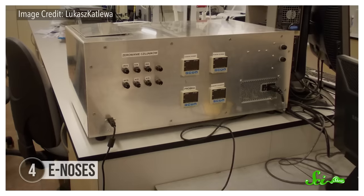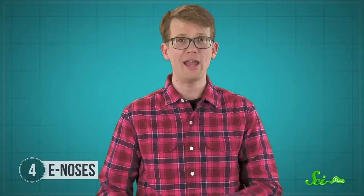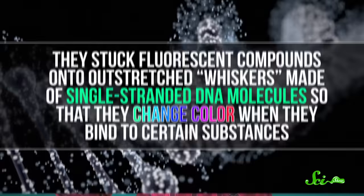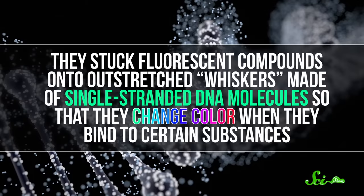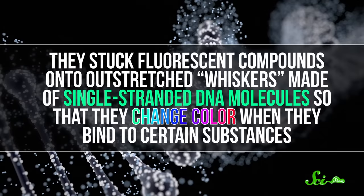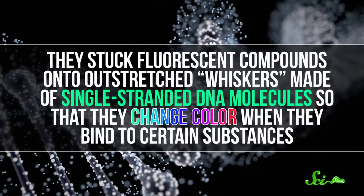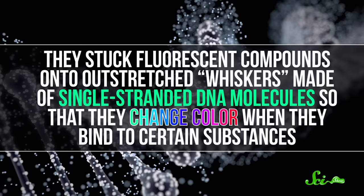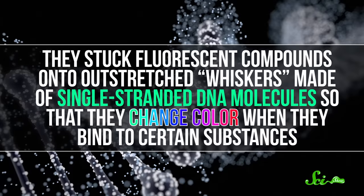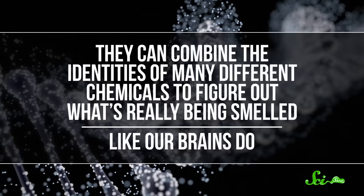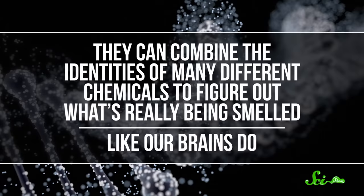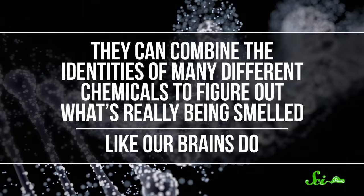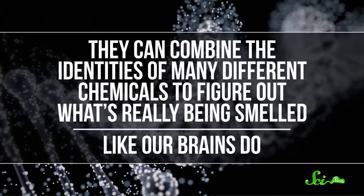One model from Stanford actually uses fluorescent DNA to detect different chemicals. They stuck fluorescent compounds onto outstretched whiskers made of single-stranded DNA molecules so that they change color when they bind to certain substances. This, along with some of the other e-noses, are especially cool because they can combine the identities of many different chemicals to figure out what's really being smelled, like our brains do.